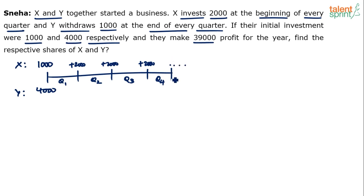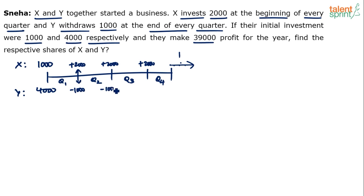After Q4 he may add more, but we're not worried because the year ends there. What happens to Y's investment? He withdraws 1,000 at the end of every quarter. The beginning of Q2 is the same point as the end of Q1, so at the end of Q1, Y withdraws 1,000 rupees. At the end of Q2, he withdraws 1,000 again. At the end of Q3, he withdraws 1,000. At the end of Q4 he may withdraw 1,000, but we're not worried because the year ends there.